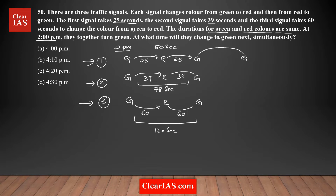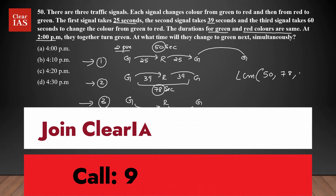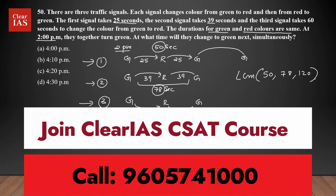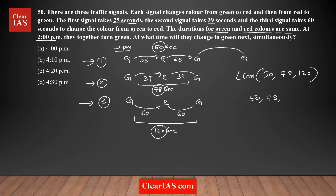The question asks: at what time will all three signals turn green simultaneously next? After 2 PM, at what time will all three again turn green at the same time? This is an application of LCM. I need to find the least common multiple of 50, 78, and 120, because at a common multiple of these numbers all three signals will be green.